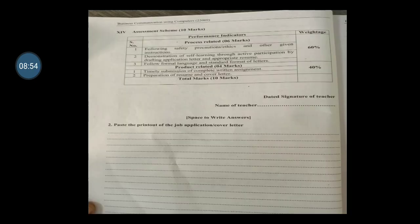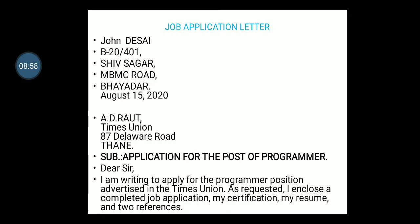Here is one example of the format of a job application letter. First, write your own address along with contact number and date. Second, the receiver's address along with their designation. Third, the subject. Fourth, the references. Fifth, the salutation. Sixth, the first paragraph for your introduction and appeal for getting the job. Seventh, the concluding paragraph with positive hopes, then thanking you. After the letter, write the resume including: name, address, date of birth, contact number, email ID, language known, marital status, hobbies, educational qualification, working experience, references, date, place, and name.